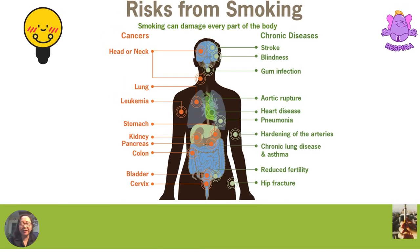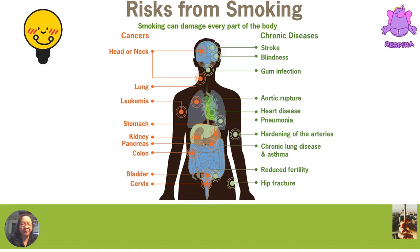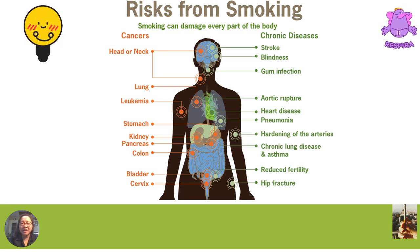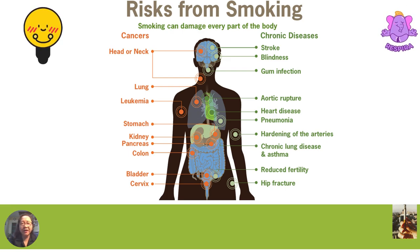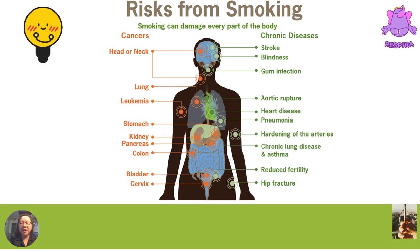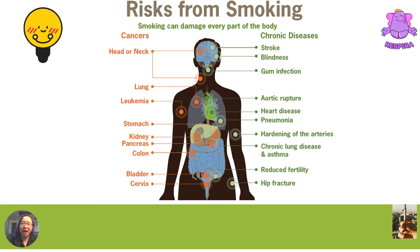Smoking can damage every part of the body. Diseases we can get from it include cancers of the head or neck, lung, leukemia, stomach, kidney, pancreas, colon, bladder, and cervix. Likewise, we can get chronic diseases such as stroke, blindness, gum infection, aortic rupture, heart disease, pneumonia, hardening of the arteries, chronic lung disease and asthma, reduced fertility, and hip fracture. As a matter of fact, when you buy a pack of cigarettes, you can read the label: cigarette smoking is dangerous to your health. Now, do you still want to smoke? Decide — life or death — the decision is yours.